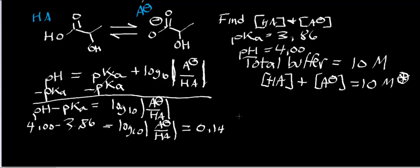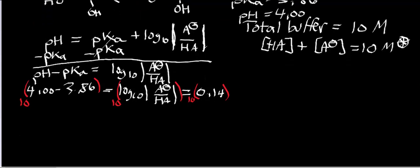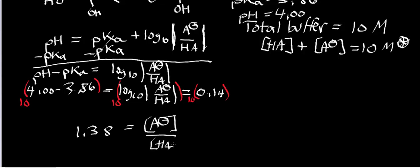Now we can isolate A- and HA by taking the anti-logarithm of both sides. Since the base is 10, we take 10 to the power of both sides. So 10 to the power of 0.14 equals 1.38. Therefore 1.38 equals the concentration of A- divided by the concentration of HA, our conjugate acid.